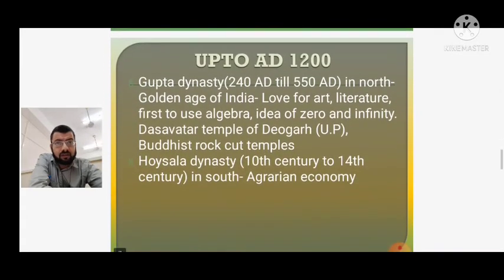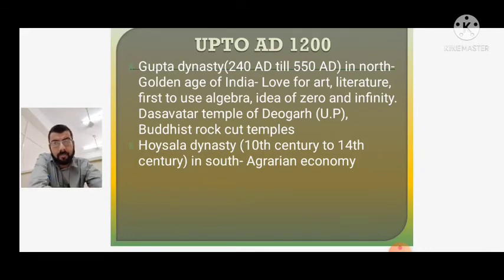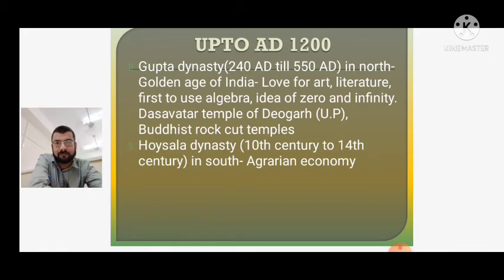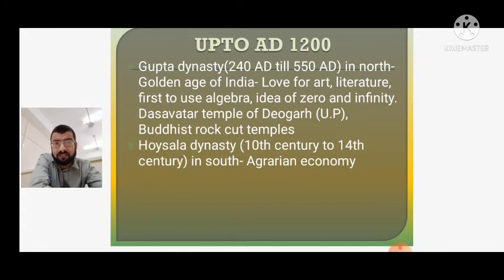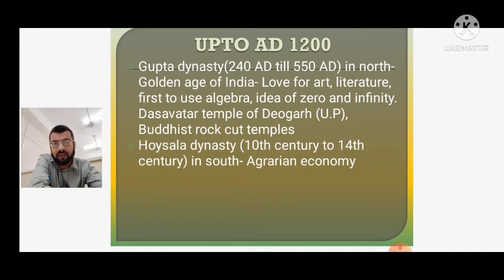From AD up to 1200, there was a widespread of the Gupta dynasty in the northern part of India, also known as the golden age of India — because of their love for art and literature, their use of algebra, and the idea of zero and infinity given by the Gupta dynasty. Beautiful architectural and Buddhist rock-cut temples were built. In the south, there was the Hoysala dynasty, which ruled from the 10th century to the 14th century — again a predominantly agrarian, agriculture-based society.